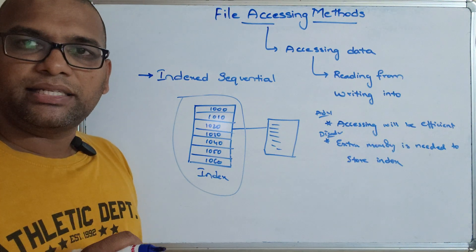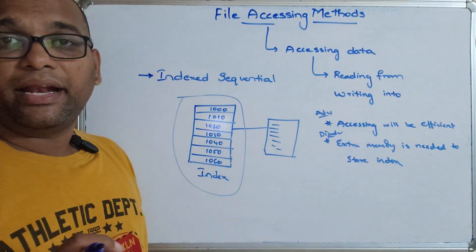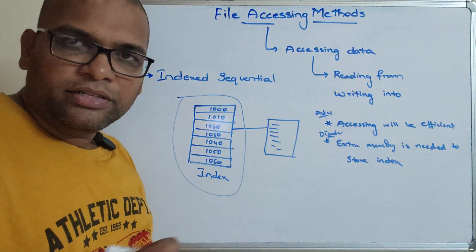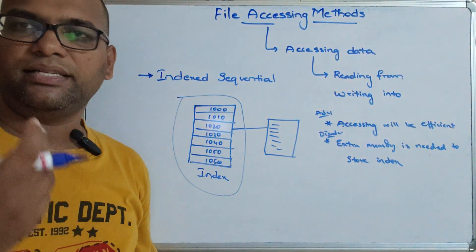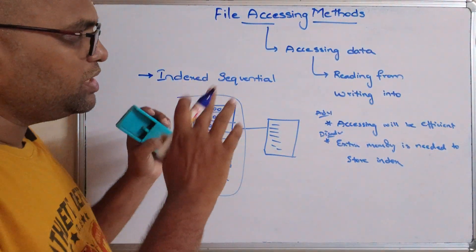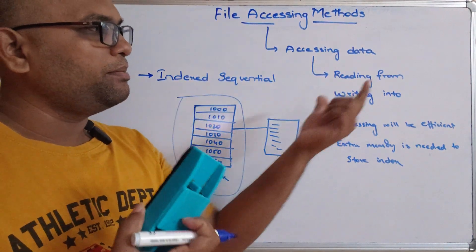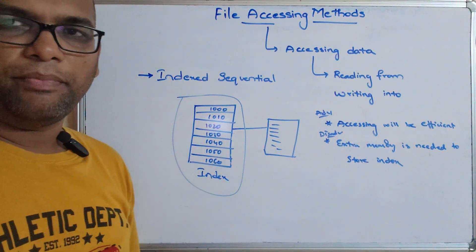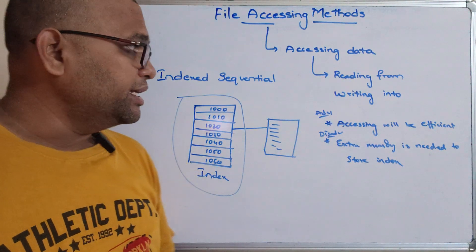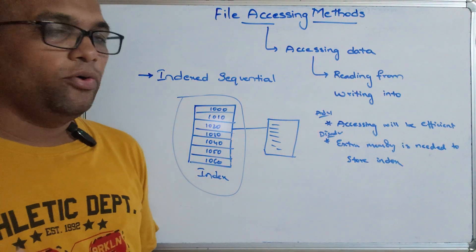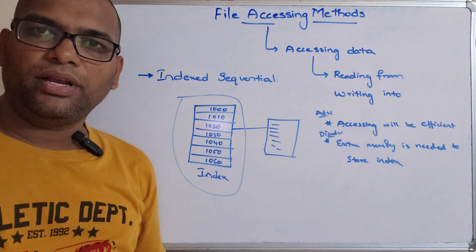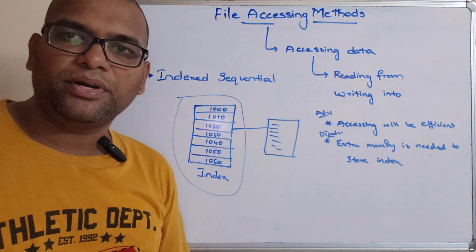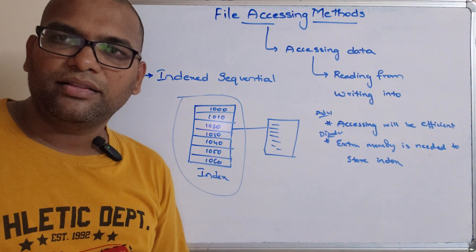So these are the three mechanisms to access data from a file: sequential access, direct access, and indexed sequential access. Every access mechanism has its advantages and disadvantages. Accessing data means reading data from a file or writing data into a file — some sort of manipulation will be done. Hope you enjoyed the session — please like, share with your friends, and don't forget to subscribe to our channel. Thanks for watching!